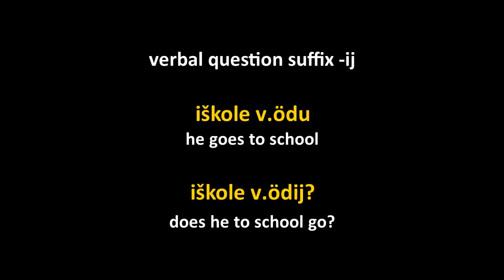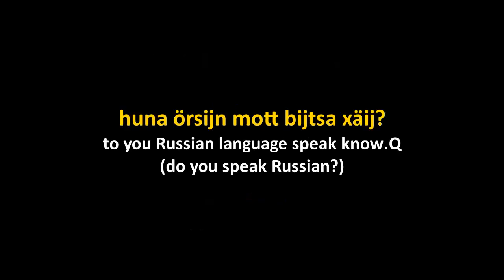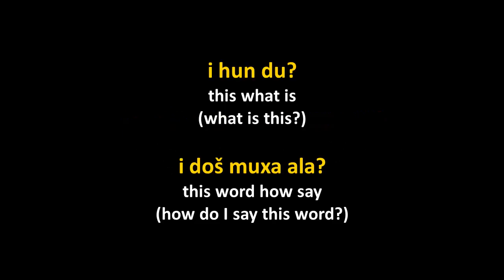If you want to ask a binary yes/no question in Chechen, you typically use the suffix -i on the verb — you change the last vowel of the verb to i. 'He goes to school' becomes 'does he go to school?' by adding -i. 'Do you know how to speak Russian?' — the question form of the verb hair 'to know' gives hayi. Note that question words are not moved to the front of the sentence; there is no fronting of question words in Chechen.